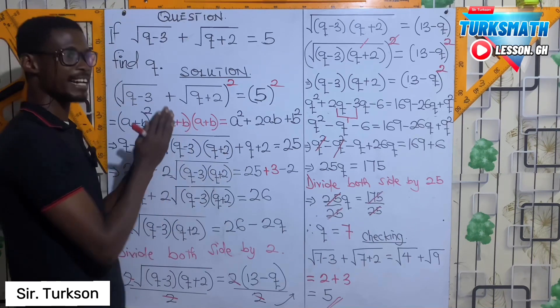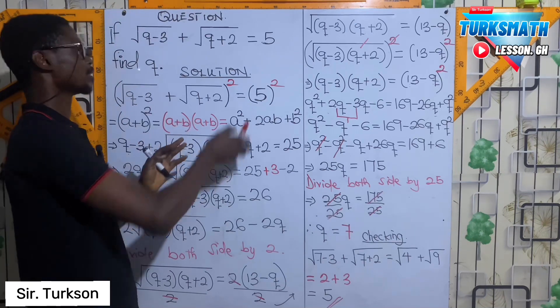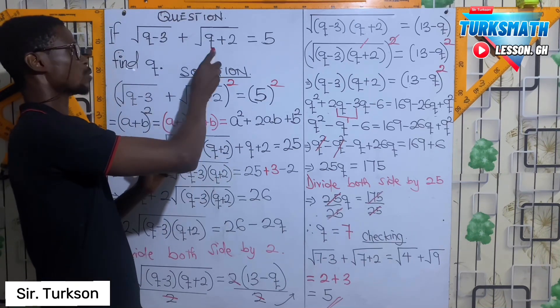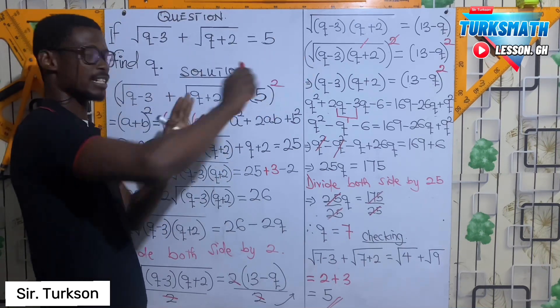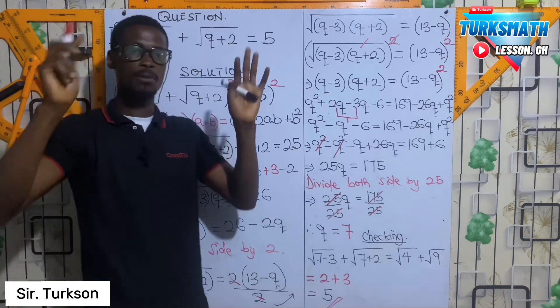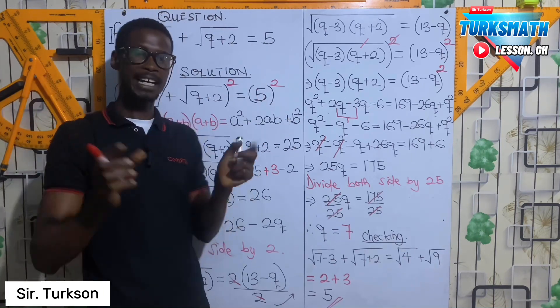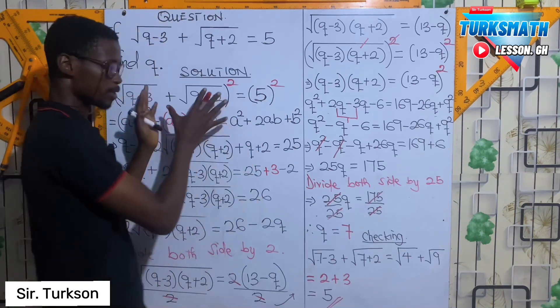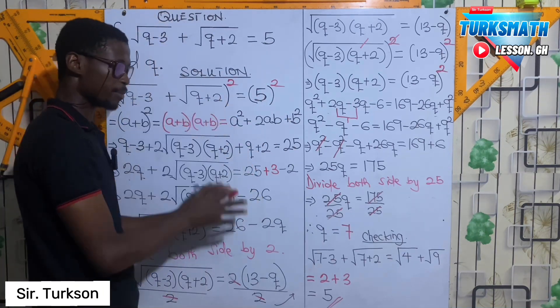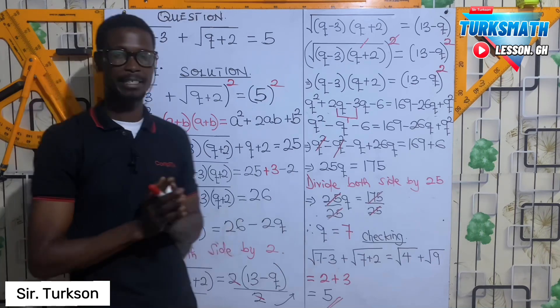For the indirect method, you can transpose any of these terms to the right-hand side, then square both sides. From there, it follows the same procedures.